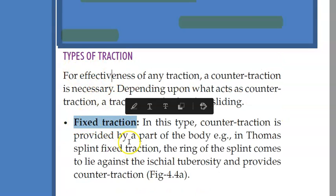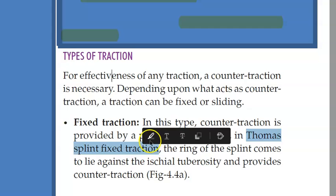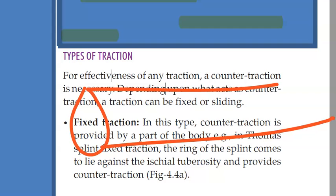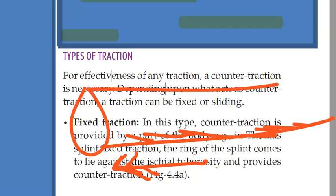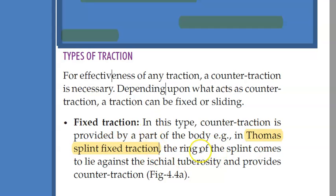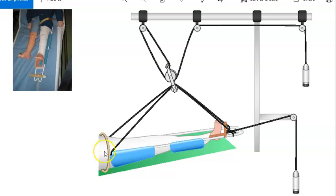Now look at the types of traction. You have fixed traction and sliding traction. Fixed traction is where, like the Thomas splint, you have the ring. The Thomas splint has a ring in which they put the leg. This ring provides the counter traction and this is the fixed traction. Your pulley and weights are pulling it one way, and your ring and everything else is pulling it the other way. In Thomas splint, the ring of the splint comes to lie against the ischial tuberosity and provides counter traction.